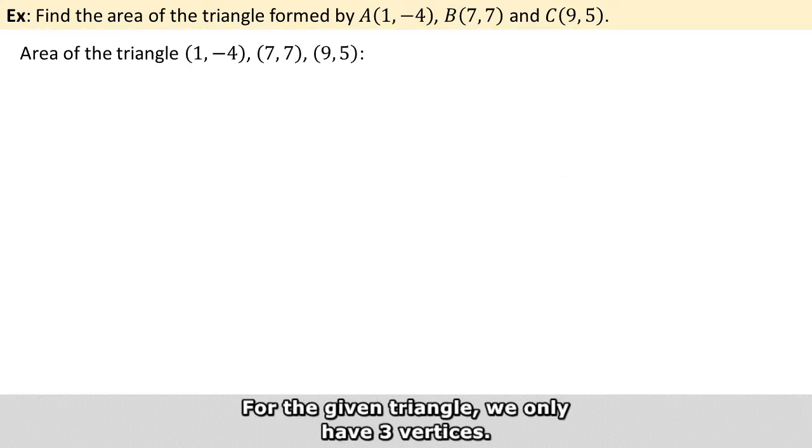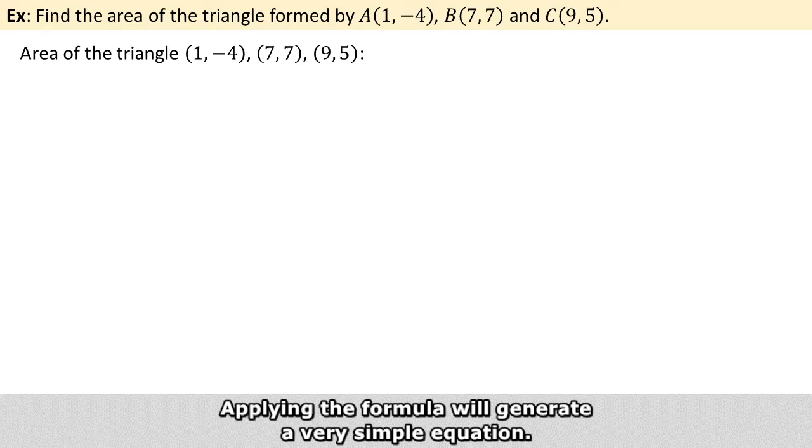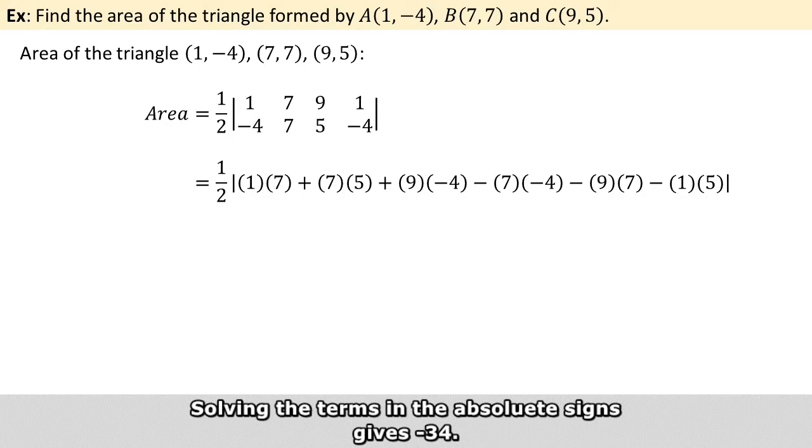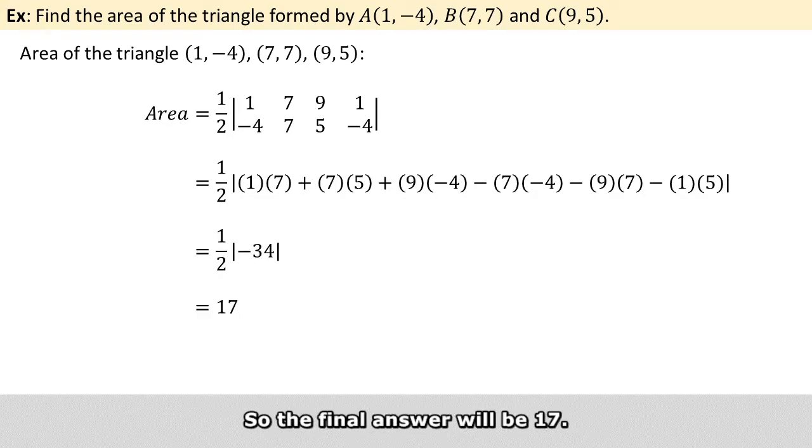So for the given triangle, we only have three vertices. Applying the formula will generate a very simple equation. Solving the terms in the absolute sign gives minus 34. So the final answer will be 17.